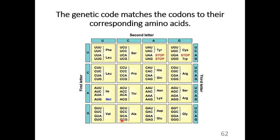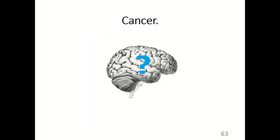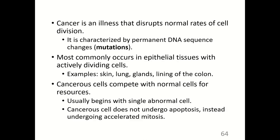Changes in base pair sequences are called mutations. Sometimes mutations can be beneficial and lead to evolution by natural selection; sometimes they can be harmful and lead to death or illness such as cancer. Cancer is an illness that disrupts normal rates of cell division, characterized by permanent DNA sequence changes called mutations. Cancer most commonly occurs in epithelial tissues with actively dividing cells, such as skin, lung, glands, and the lining of the colon. Cancerous cells compete with normal cells for resources, beginning with a single abnormal cell that does not undergo apoptosis but instead undergoes accelerated mitosis.